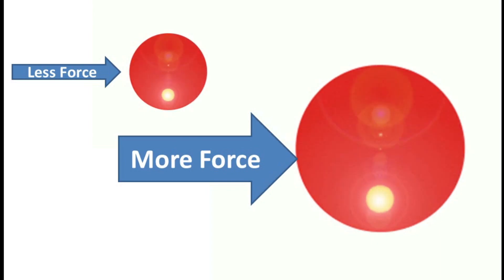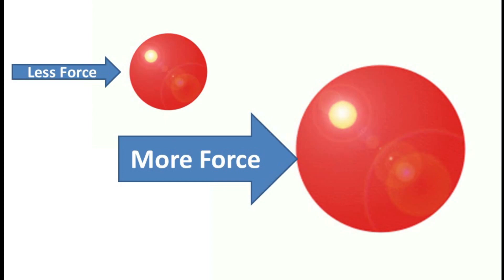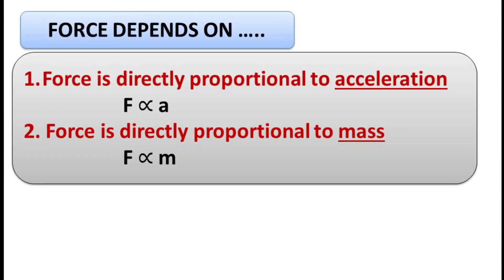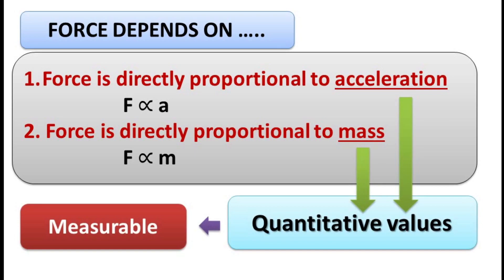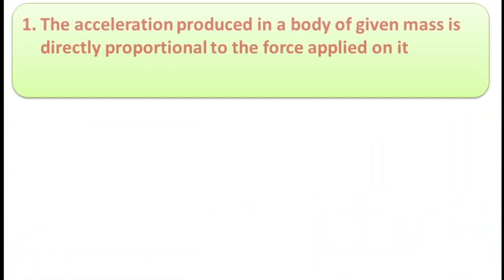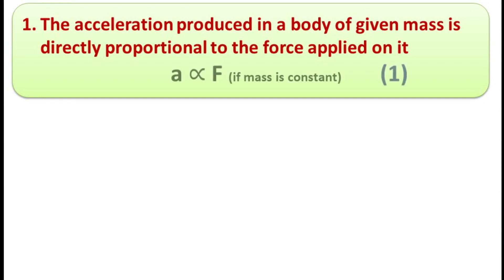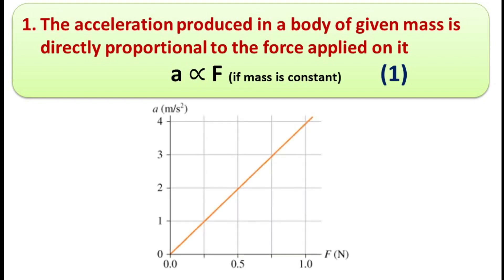Force applied on a body depends on two factors: number one, force is directly proportional to acceleration; and number two, force is directly proportional to mass. Mass and acceleration are quantitative values — quantitative means that which we can measure. The acceleration produced in a body of given mass is directly proportional to the force applied on it — acceleration is directly proportional to force if mass is constant. Write this as equation number one. If we plot a graph showing acceleration A against force F, it will be a straight line as shown in the figure.